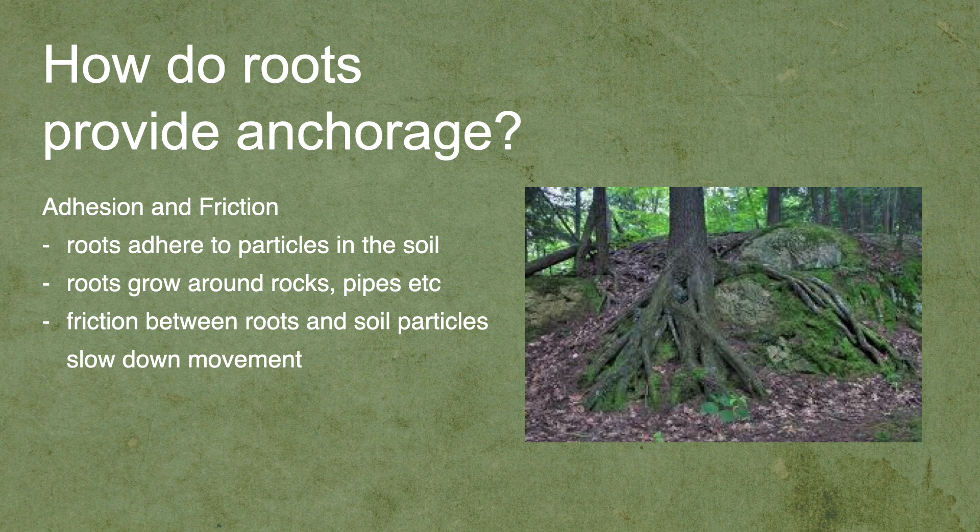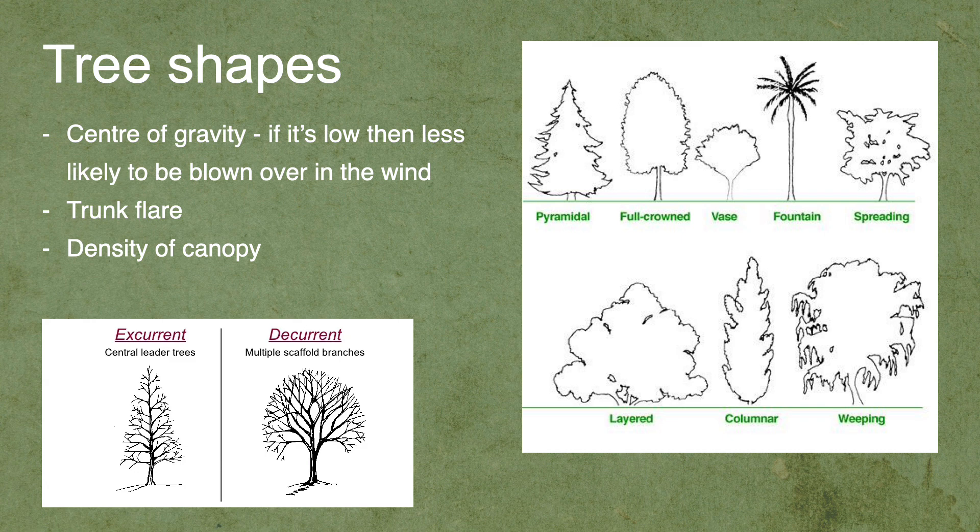Roots are tiny — microscopic at the ends. We tend to think of chunky roots over rocks, but actually the ends of roots are very small and they adhere to particles in the soil through weak forces, kind of sticking to bits of soil. They can also grow around rocks and pipes, which helps with anchoring. There's also friction between roots and soil particles that slows down movement. If a tree is moving in the wind, the friction from all those roots — plus the thick mat of roots and the mycorrhizal fungi — is a lot of friction that can slow down the movement of the tree.